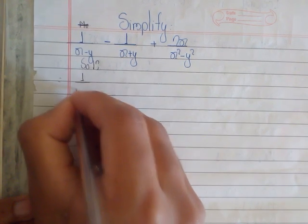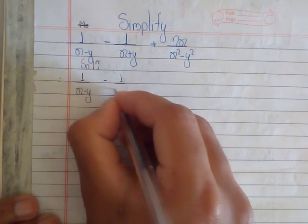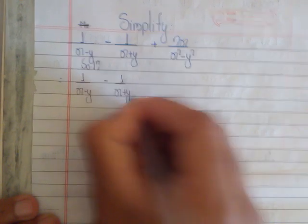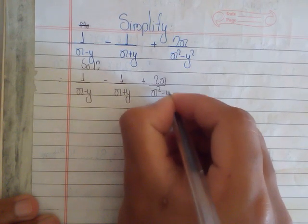The rule in mathematics: we have to copy the equation first. 1/(x+y) + 2x/(x²-y²).